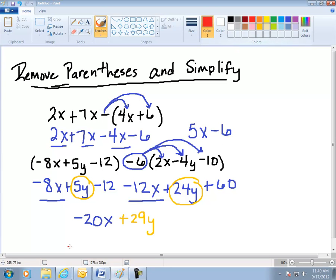And then I have a negative 12 and a positive 60. They're going to combine to give me 48. So that would be my final answer minus 20x plus 29y plus 48.